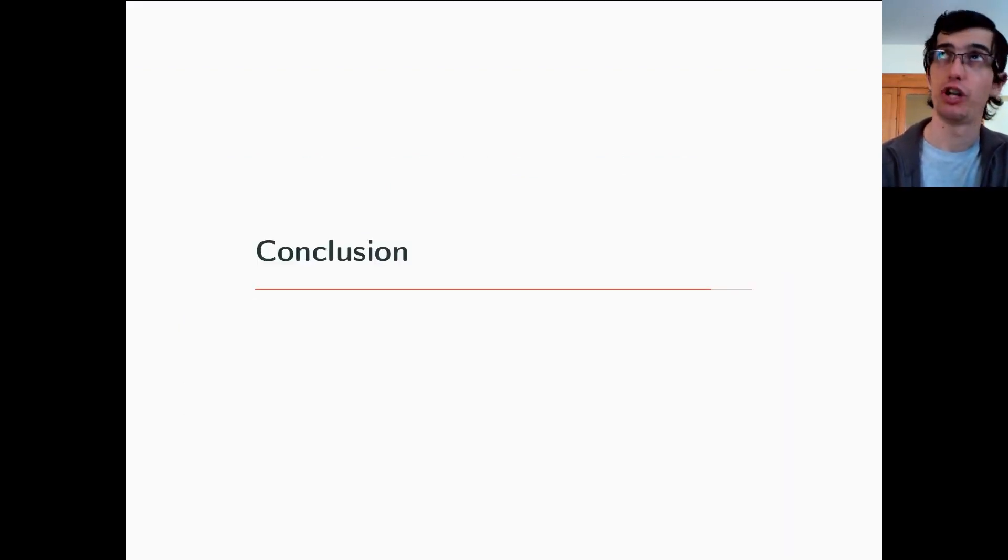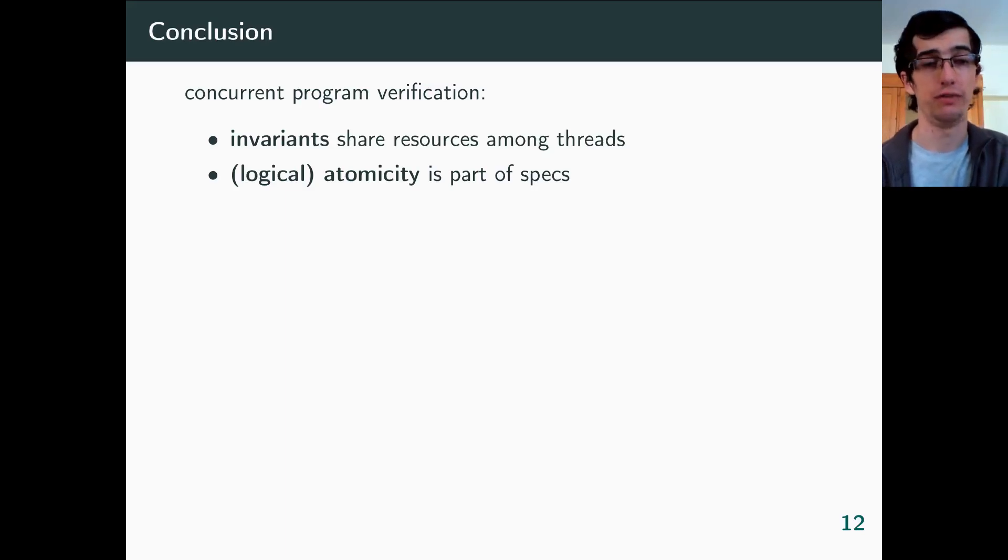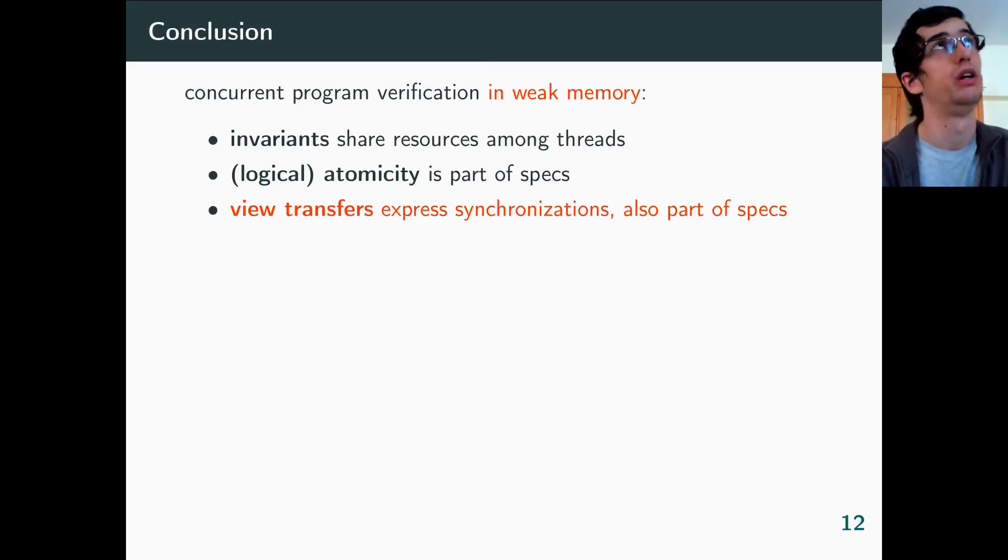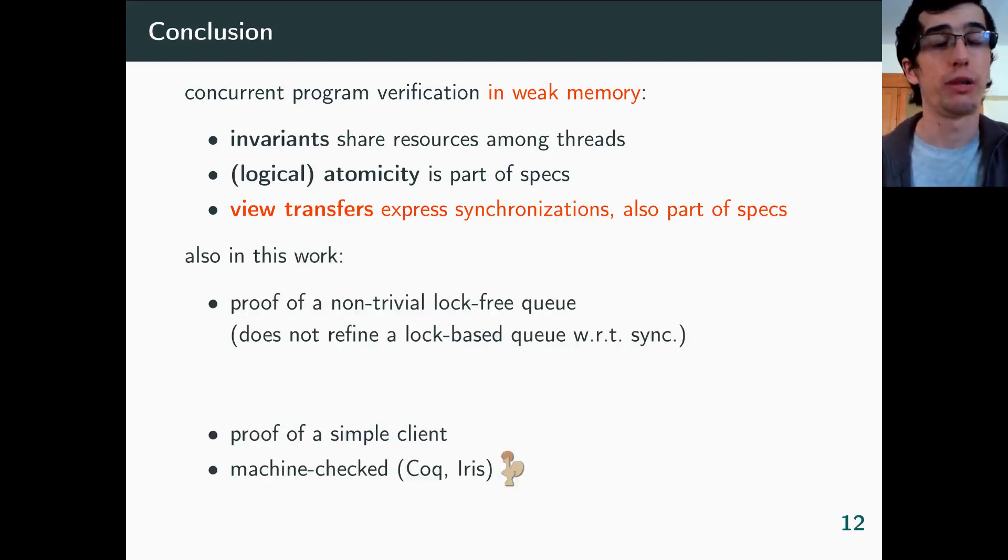To recap, I've shown several tools for reasoning about concurrent programs. Invariants are well known already. To use invariants to their full power, we need to pay attention to atomicity in specs. And for that, we have logical atomic triples. What's new is that now, we want to support weak memory. And for that, we have views. My claim is that the combination of all of these tools works. Logical atomicity is compatible with weak memory. And it's expressive enough for specifying and proving fine-grained concurrent programs, while at the same time remaining quite natural to use.